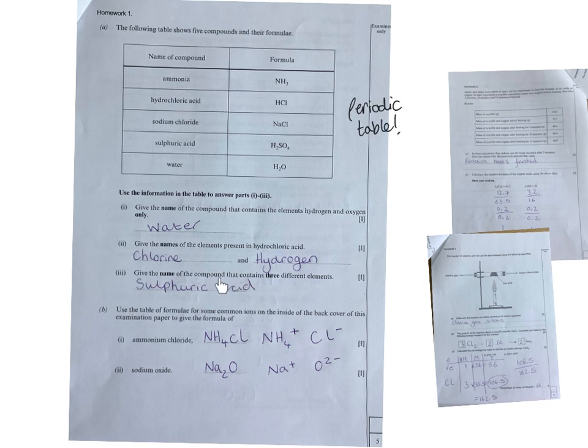Give the name of the compound that contains three different elements. So it's this one because you've got hydrogen, sulfur and oxygen, so sulfuric acid.